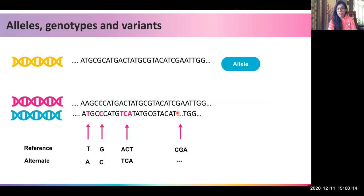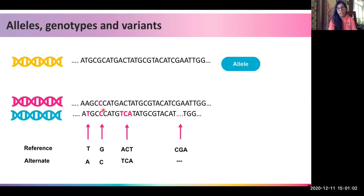At another position the reference is C, G, A whereas one strand has C, G, A but the other strand has a deletion of C, G, A — this is also called out as a mutation. Now, if the reference is T and we have an A/T genotype, or if the reference is G and we have a C/C genotype, one has the reference allele on one strand while the other has only the alternate allele on both strands.